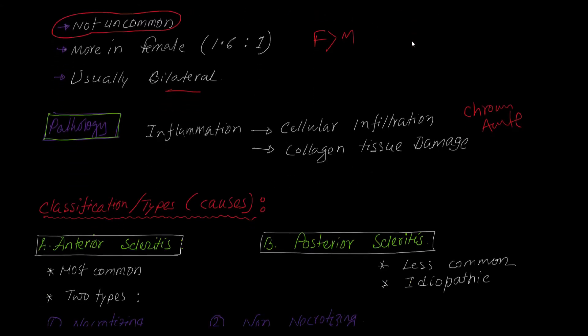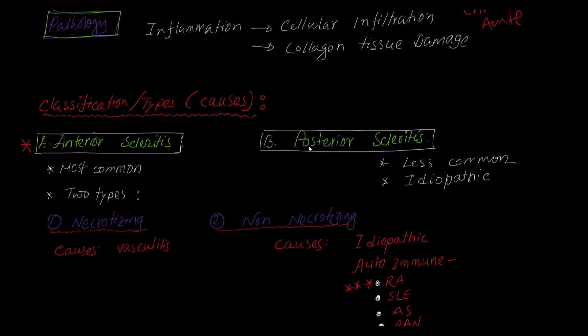What is the classification or types of scleritis? There is anterior scleritis and posterior scleritis — a classification based on anatomical location. Posterior scleritis is very uncommonly found and is considered idiopathic. Coming to the main point: anterior scleritis is the most commonly found form, and it is of two types based on histology: necrotizing and non-necrotizing.